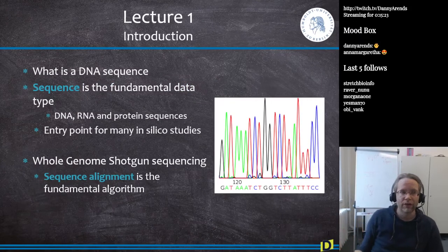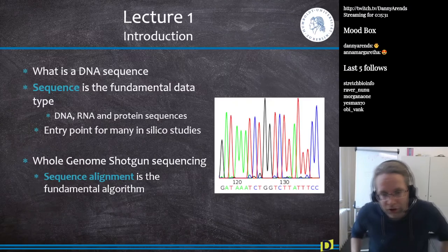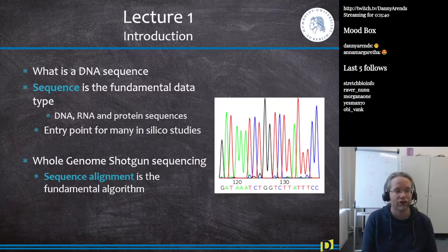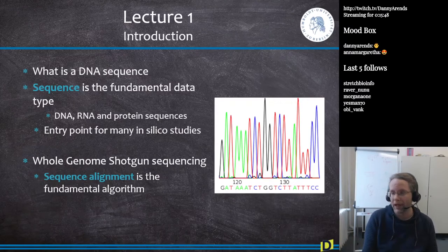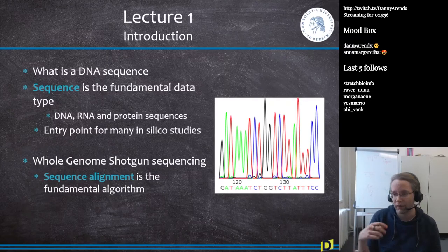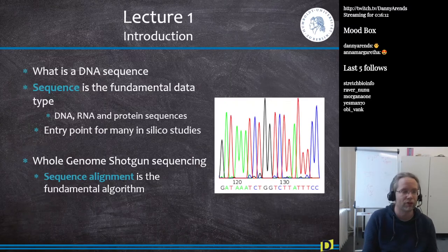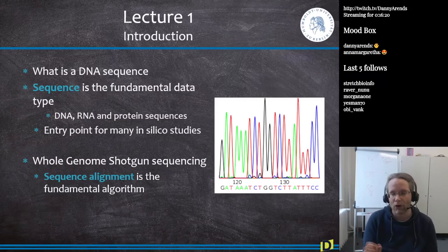We discussed that DNA sequence is the fundamental data type in bioinformatics. DNA, RNA, and protein sequences are more or less the reasons the field exists — people needed to store them in databases and analyze them. Thinking about the coronavirus situation, it all started with people sequencing the virus, figuring out it was a Sarbecovirus, making phylogenetic trees, and tracking mutations. Also know what whole genome shotgun sequencing is, and that sequence alignment is one of the most fundamental algorithms in bioinformatics.